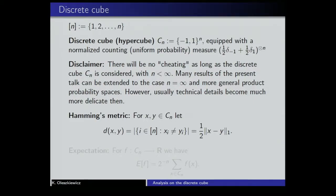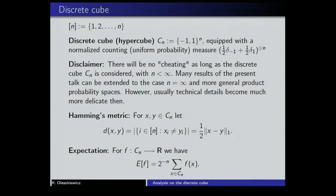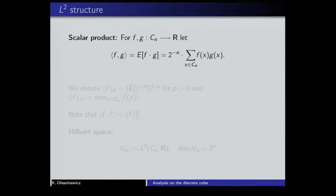On the cube, we can also consider the standard Hamming metric. The distance between two points x and y — two vertices — is just the number of coordinates on which these two vertices differ, which is obviously the same as the L1 norm normalized by a factor of 2. Given the standard measure on the cube, we have a real-valued function on the cube and an expectation, which is just the arithmetic mean of values of f at all vertices of the cube. This is our basic notation.